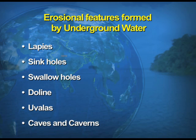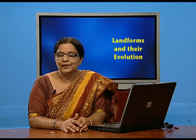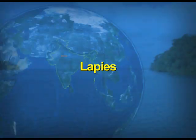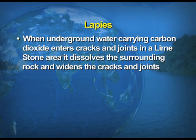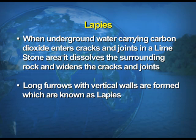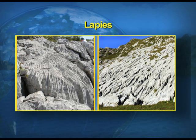We will discuss all these features separately. First, we take up the formation of lappies. When underground water carrying carbon dioxide enters the cracks and joints in a limestone area, it dissolves the surrounding rock and widens the cracks and joints by its solution activity. The long furrows with vertical walls that are formed are known as lappies — deep furrows formed by underground water.